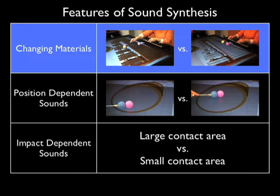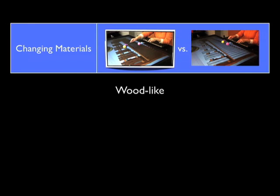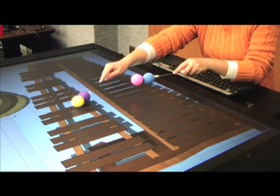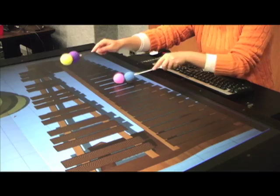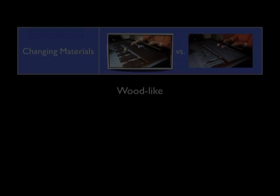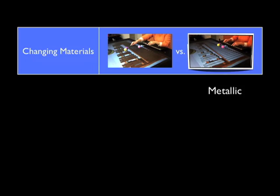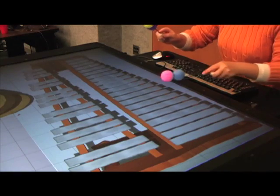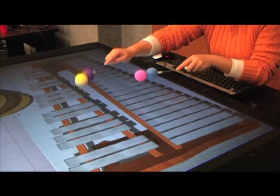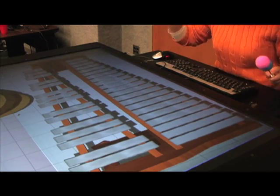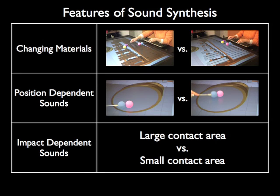We show an example here. First, we use a more wood-like material for our xylophone. Now we show a metallic xylophone.